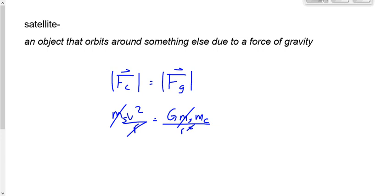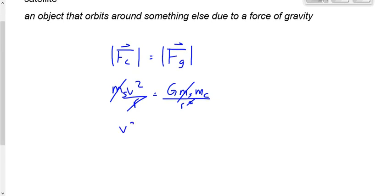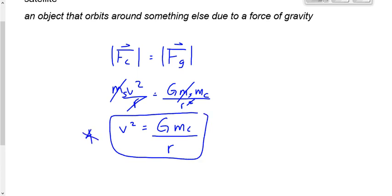So what are we left with? On the left side, V². On the right side, G times mc, the mass of the central body, divided by R. I'm going to star this because it does not appear on your data sheet. You're expected to derive it from FC = mv²/r and FG = G·m1·m2/r², canceling one r and one m — specifically the satellite's mass.